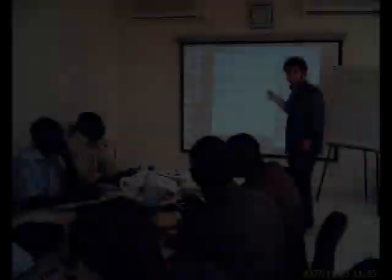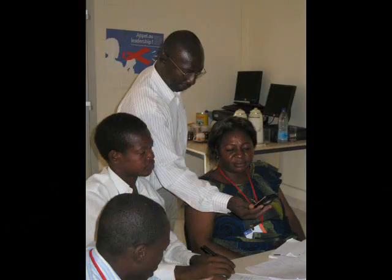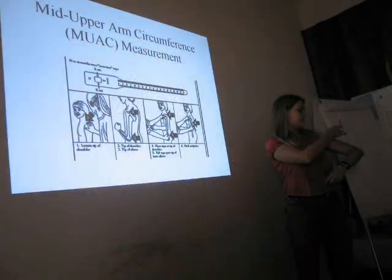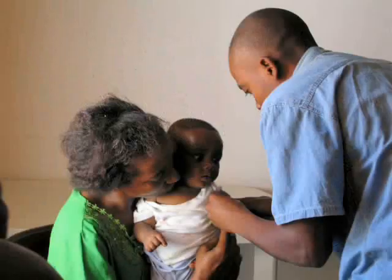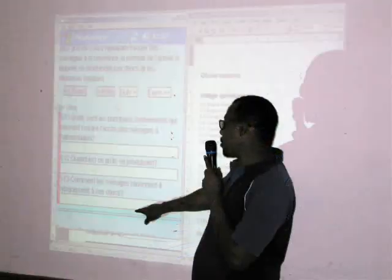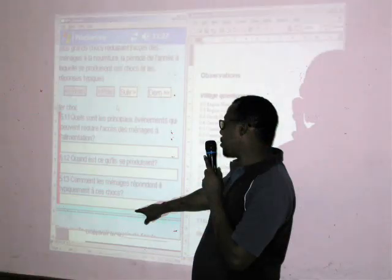In WFP, assessments are used to analyse the state of food security and to provide early warning by collecting baseline data in countries with chronic malnutrition or with risk of hazards, and are also carried out to assess the impact after a shock.